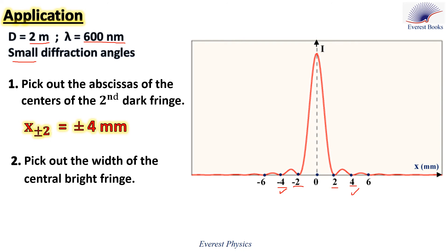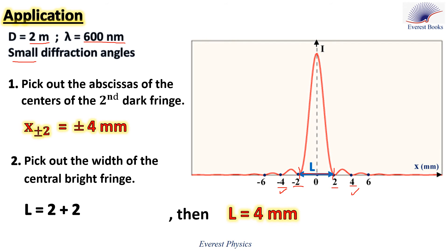Number two: pick out the width of the central bright fringe. The central bright fringe is bounded between the first dark fringe on the left side and the first dark fringe on the right side. So from the figure, L equals 2 plus 2, and the width of the central bright fringe equals 4 millimeters.